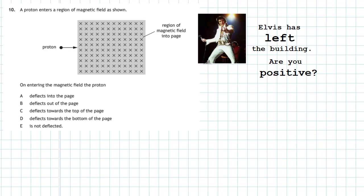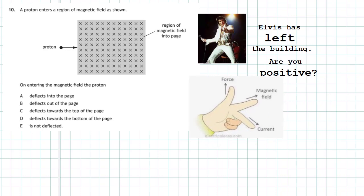The left hand rule says: the magnetic field — you point in its direction, in this case into the screen as you look at it. Your second finger is the current — that's the direction of the charge — which is going from left to right. Therefore, the force in this particular case must be upwards, so the proton is deflected upwards.